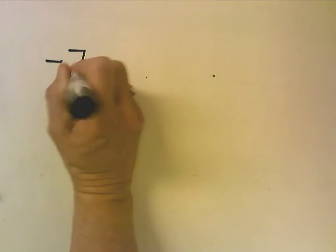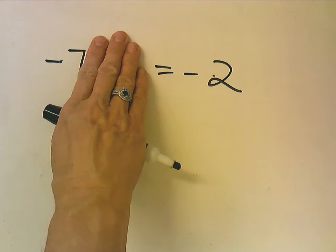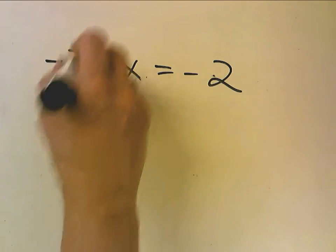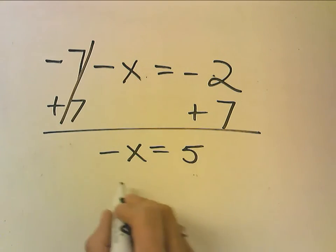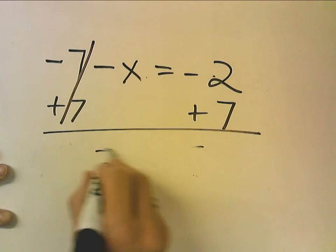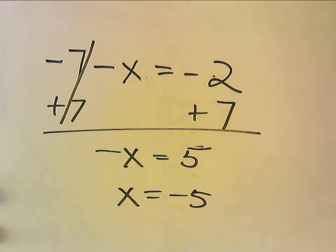Now go ahead and try the next one on your own, stop the video, and turn it on to watch me do it again. So we have negative 7 minus x equals negative 2. I'm going to cover up the negative x because I don't want to think automatically that you just add 7. If it's a negative 7, I want to zero it out, I'm going to add 7, and add 7 here, and I get negative x equals 5. I could divide by negative 1, x equals negative 5. Or I could just think, if the opposite of x is positive 5, then regular x is negative 5.